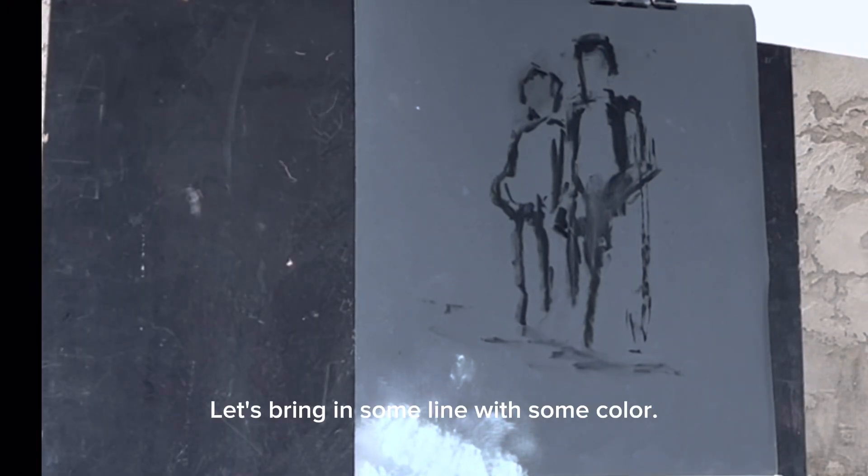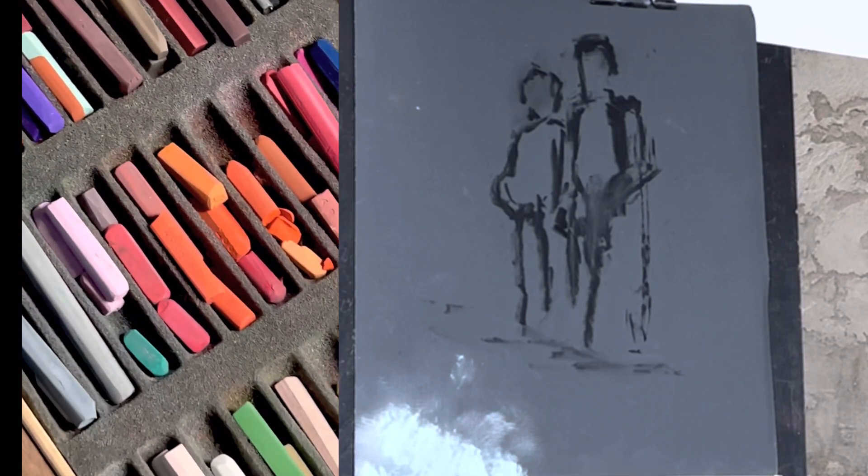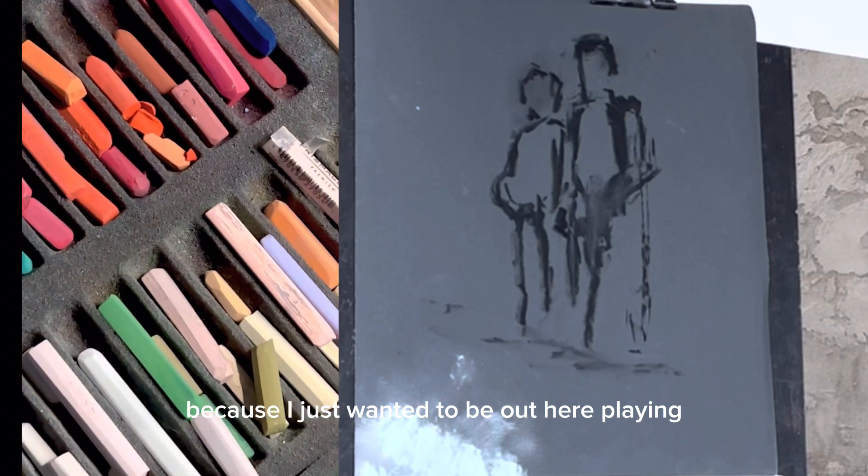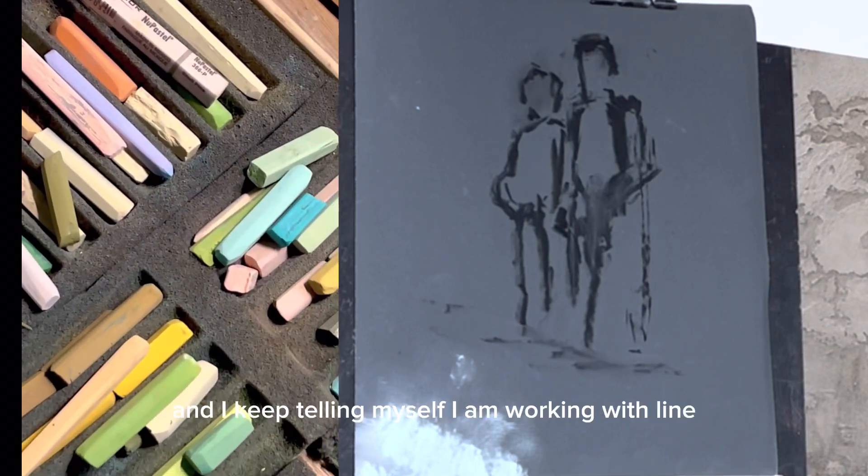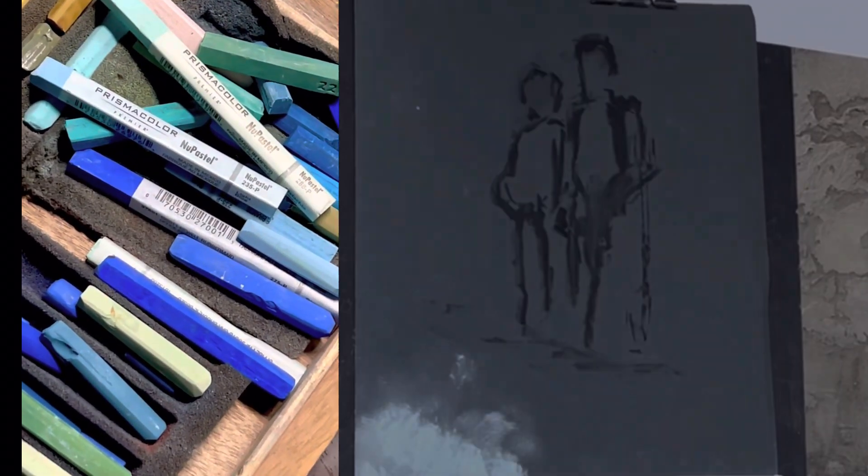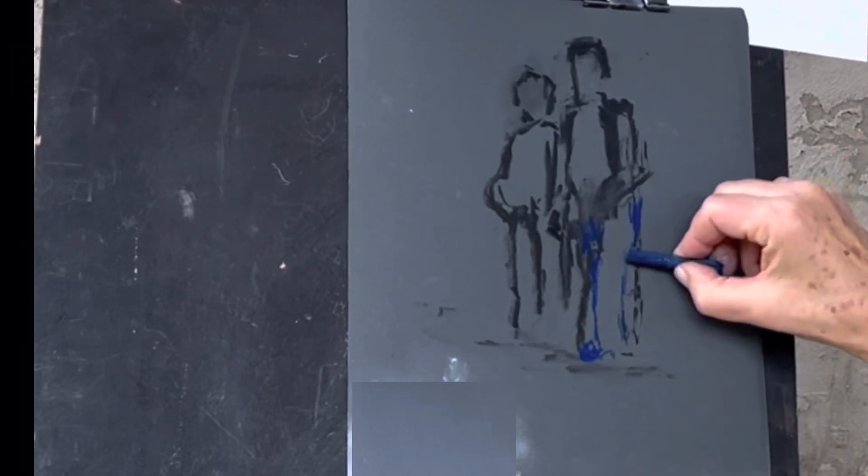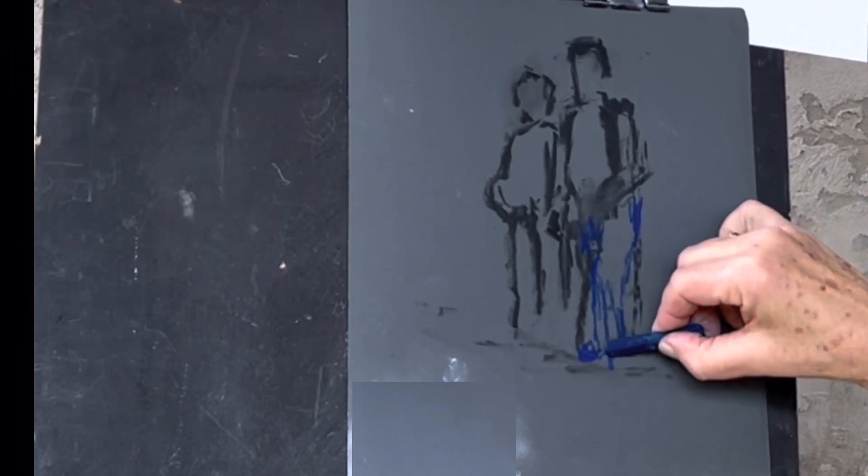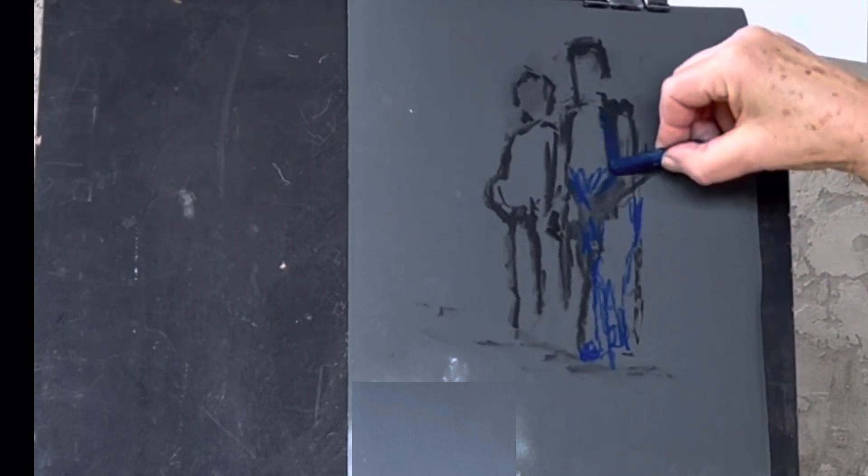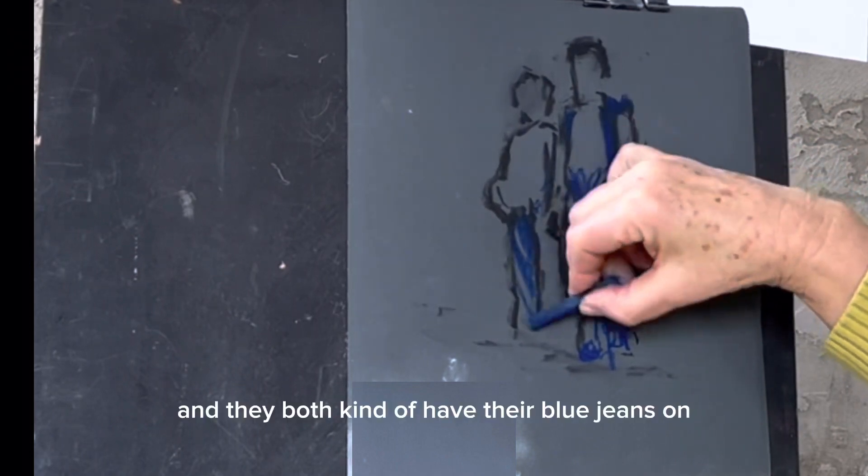Let's bring in some line with some color. I am going to choose a few colors. And all I have here right now are my new pastels, because I just wanted to be out here playing. And I have to keep thinking and I keep telling myself, I am working with line. I am making a vest, and they both kind of have their blue jeans on.